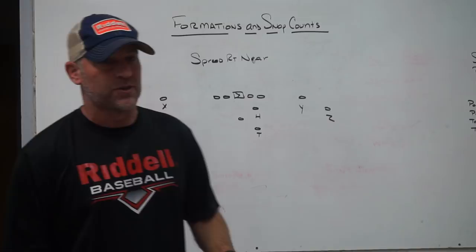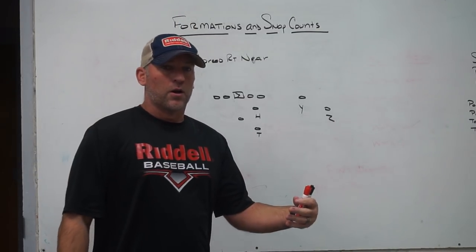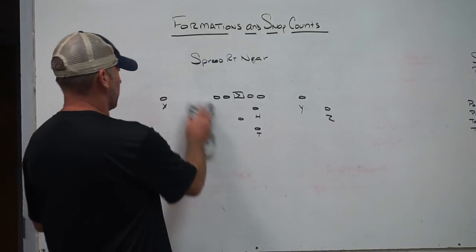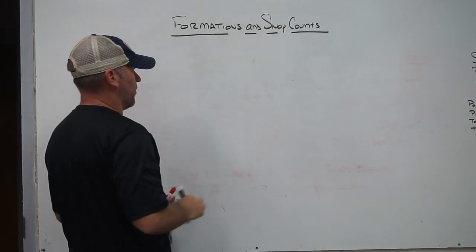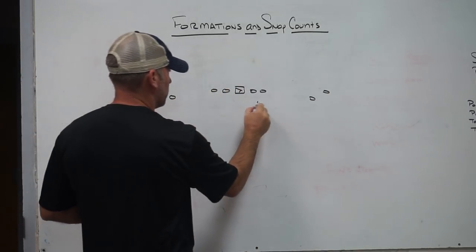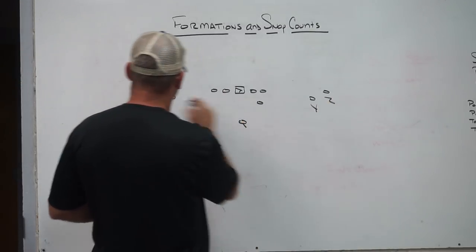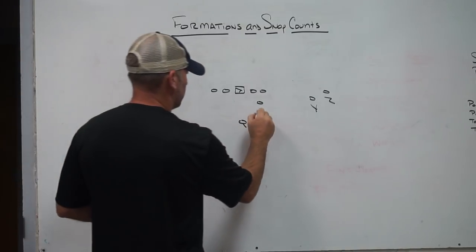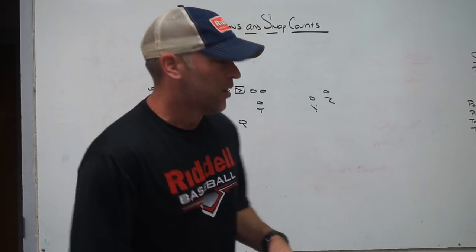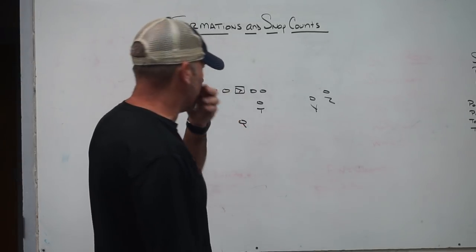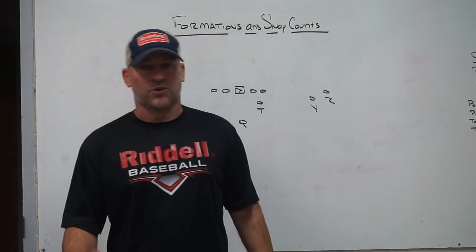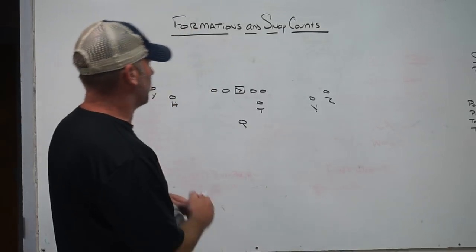When we build our tempo formations, we give them a word that helps the kids word-associate with that formation, and we never change that formation. For instance, when we used to be a heavy quarterback run team, one of our standard tempo formations was a two-by-two set with the tailback up as a sniffer, or we might replace the tailback with a fullback body type. Generically we can call 'even right' or 'even left.'